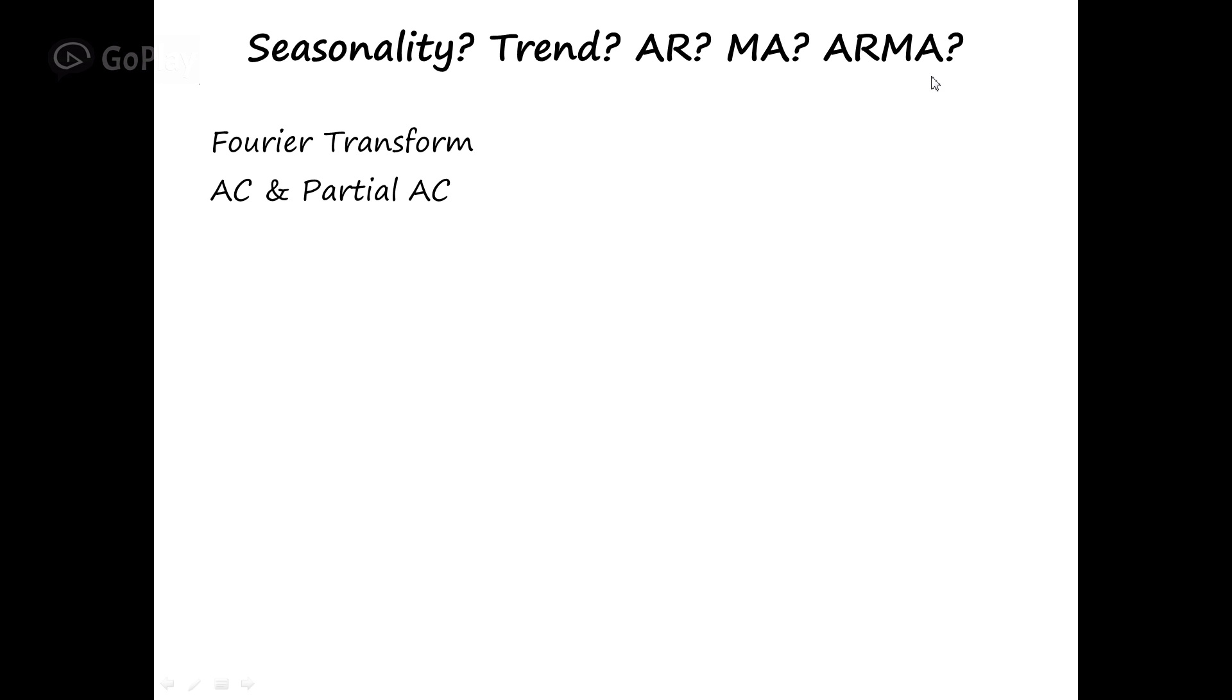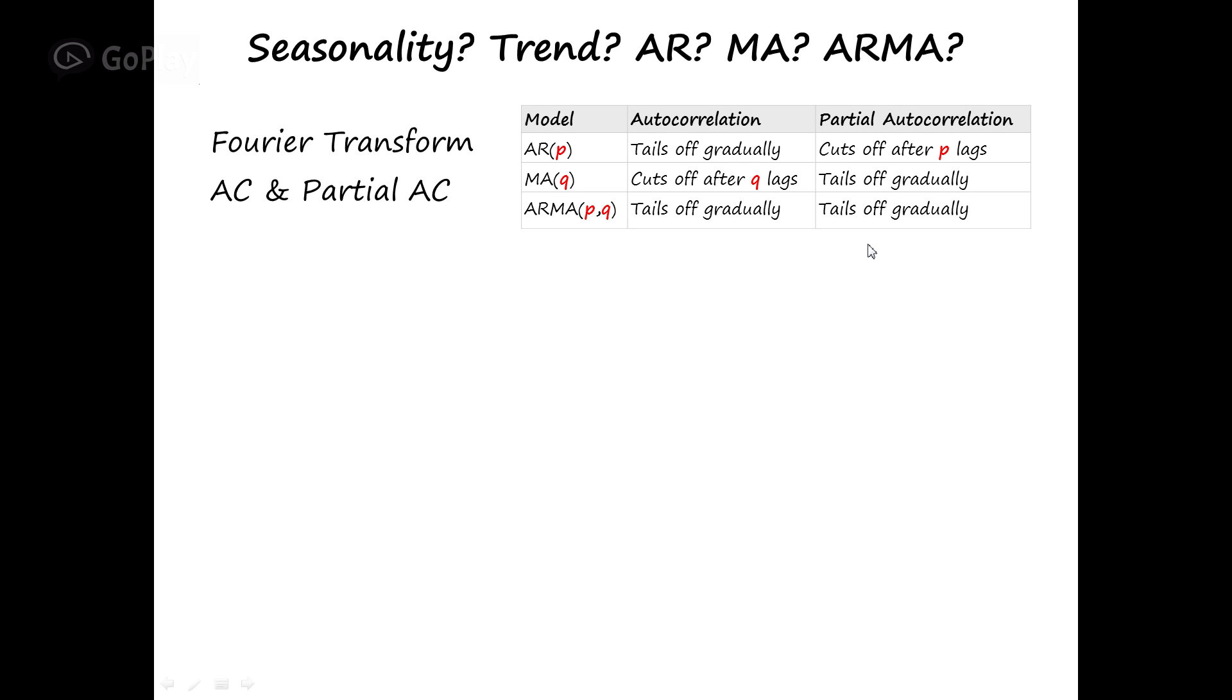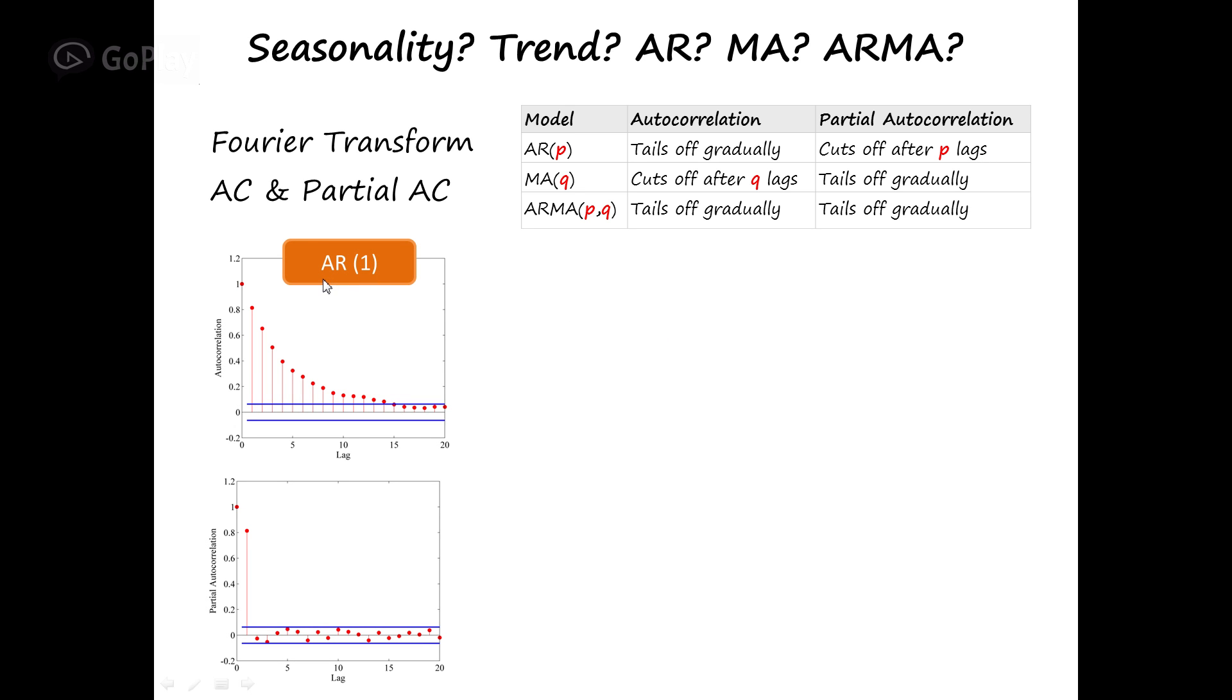But you can use autocorrelation and partial autocorrelation to judge if the system or if the signal is autoregressive or moving average or combination of both. As a rule of thumb, if you are working with the autoregressive model with the order of P, autocorrelation tails off gradually and partial autocorrelation cuts off after P lags. For example, here you can see AR with the order of 1. This graph shows autocorrelation and this graph shows partial autocorrelation. As you can see, autocorrelation tails off gradually and partial autocorrelation cuts off exactly after 1 lag because the order is 1.